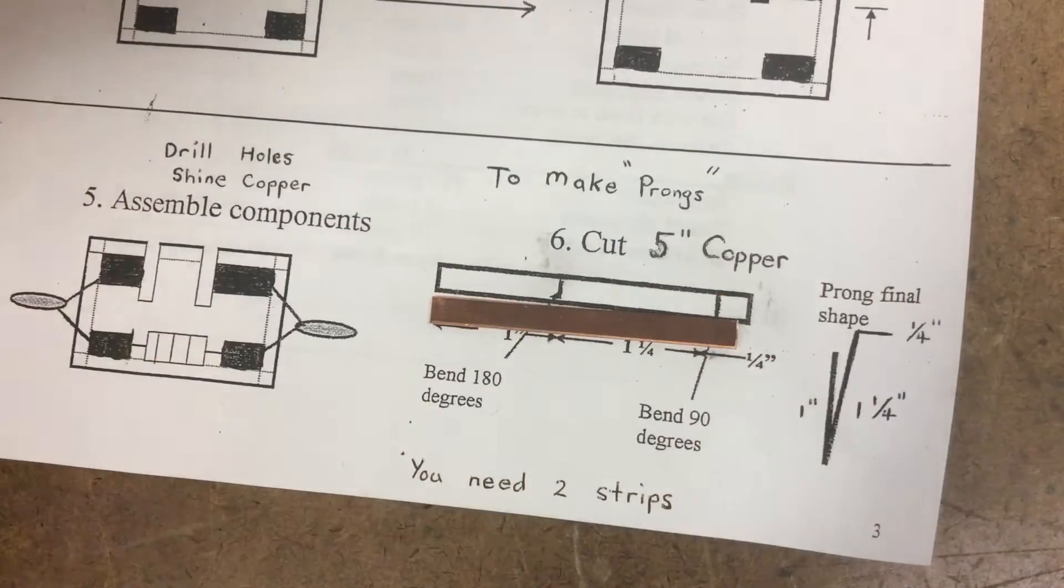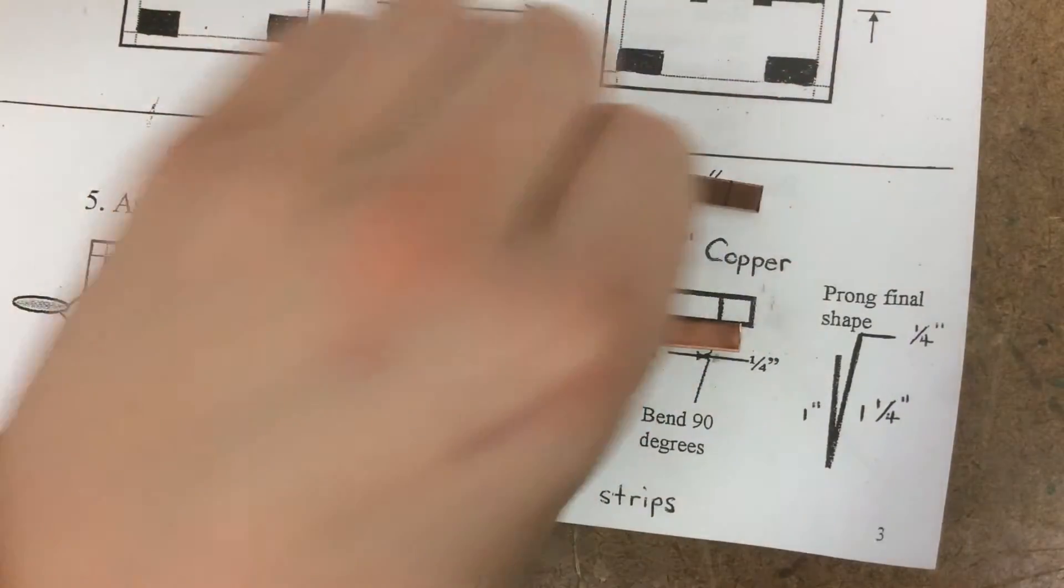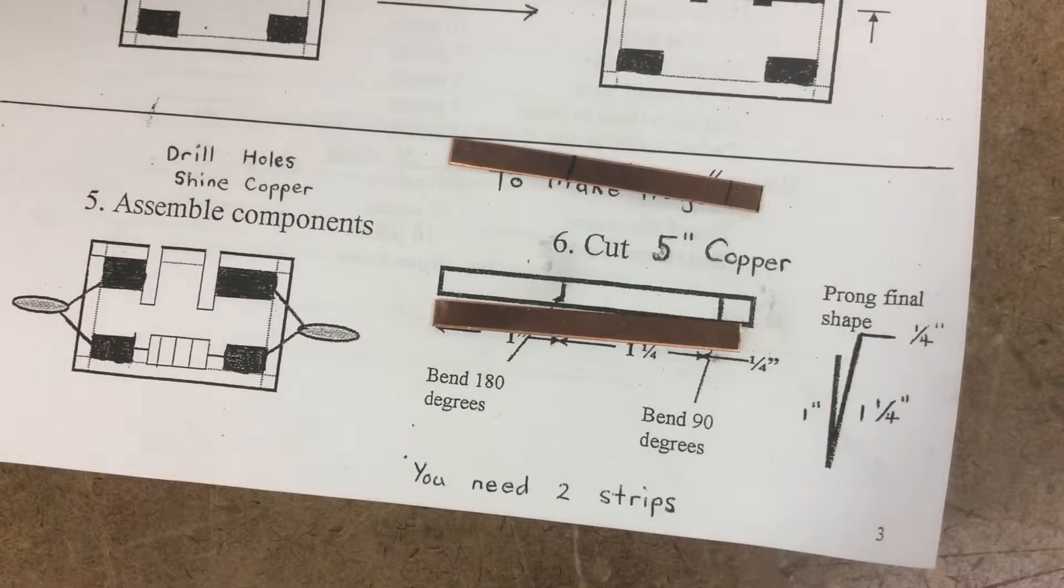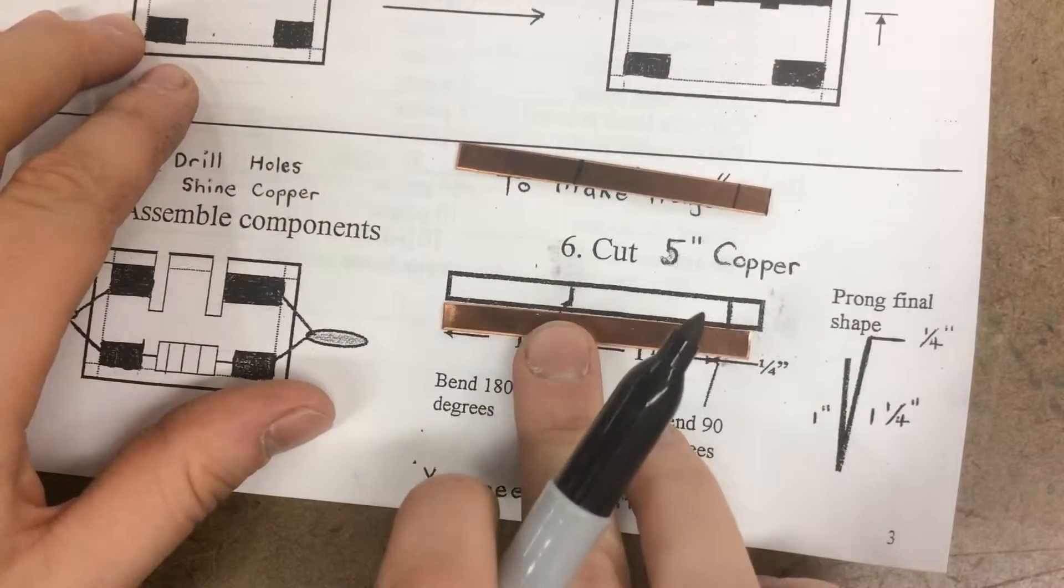You marked one half of the prong like so. Now you want to go ahead and do the second one. You could start it from this end or this end.